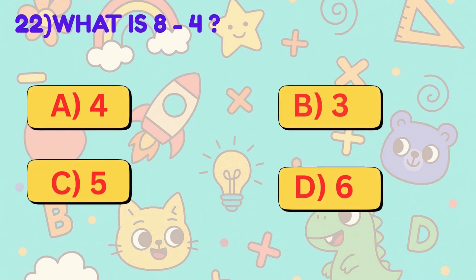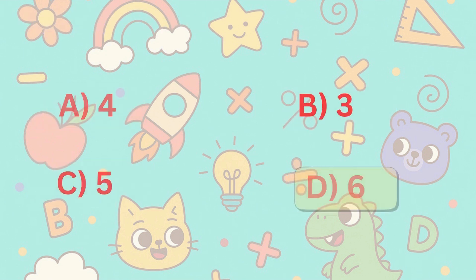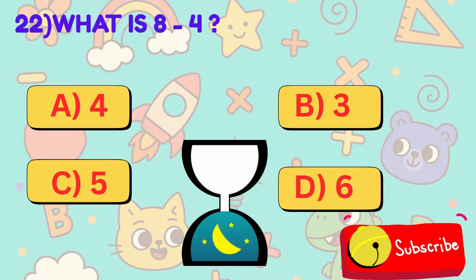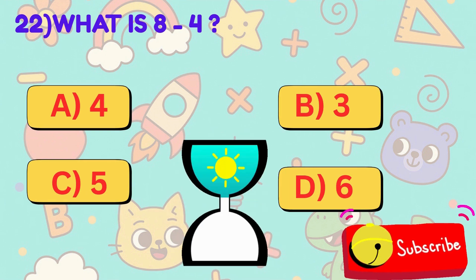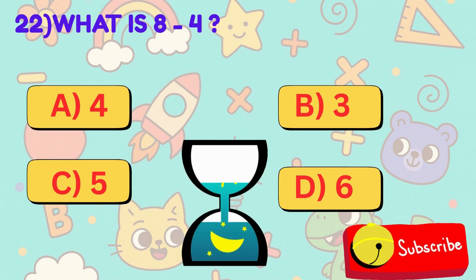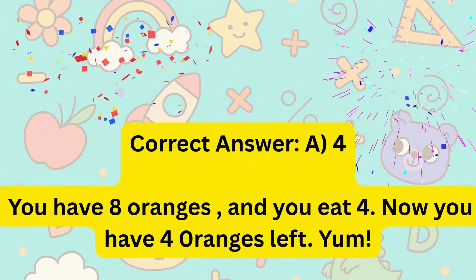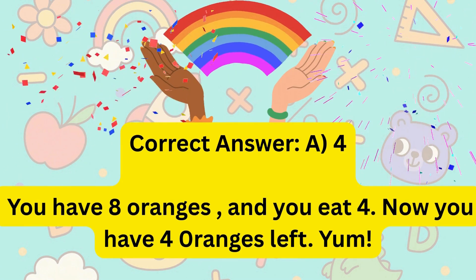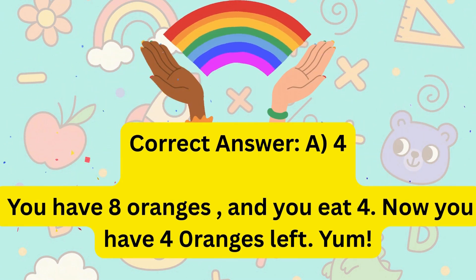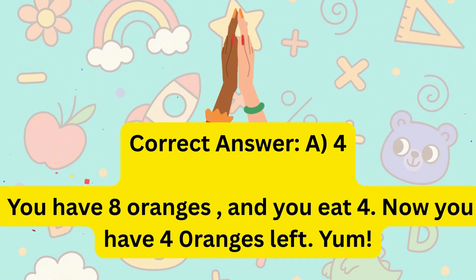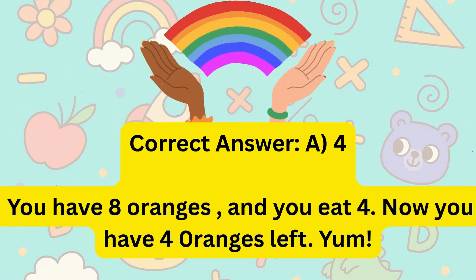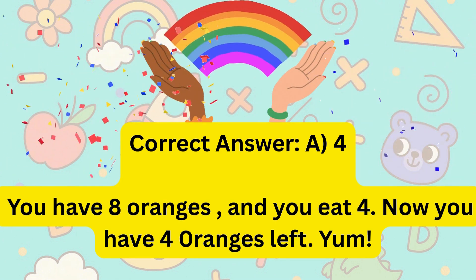22. What is 8 minus 4? Is it A, 4, B, 3, C, 5, or D, 6? Correct answer is A, 4. You have 8 oranges and you eat 4. Now you have 4 oranges left. Yum!